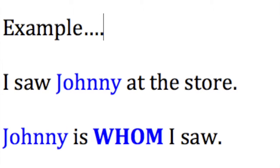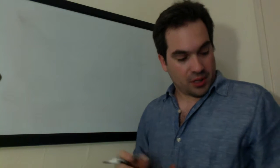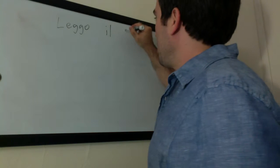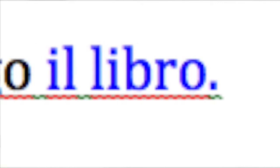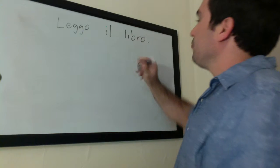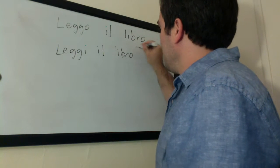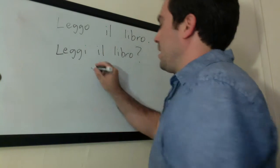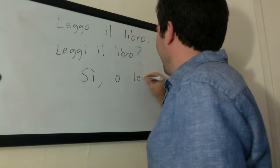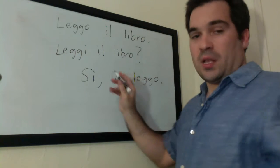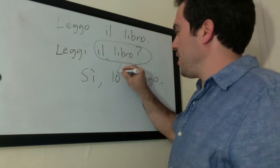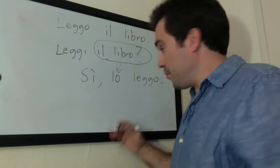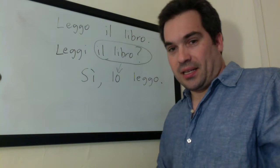Now let's look at a few examples in Italian. Let's use the example leggere. So how about: Leggo il libro. I read the book. The book is the direct object. Tu leggi il libro. So instead of repeating il libro over and over again, we can just say: Lo leggo. So il libro is replaced by lo. Now notice in Italian, the direct object pronoun comes before the verb. In English it comes after — I read it. It is the direct object pronoun.